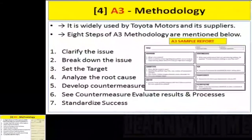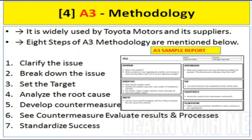The next one is the A3 method. In the A3 method, there are 8 steps. First, clarify the issue. Next, set the issue. Next, set the target. Next, analyze the root cause. Then analyze the countermeasures and set the countermeasures. Finally, review the result and process.